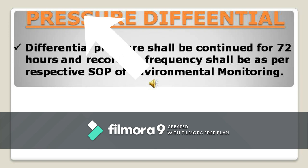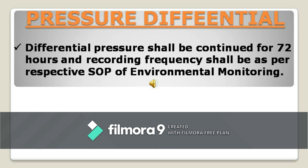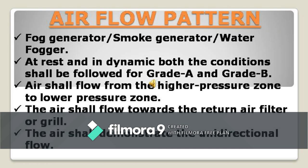The next test is air pressure differential. Magnehelic gauges are used for this. We record pressure differential continuously for 72 hours. The frequency should be the same as your routine monitoring, and you need to record 72 consecutive hours of pressure differential data. The acceptance criteria will be as per your room specification for HVAC — it should be within the predetermined specification for that area.